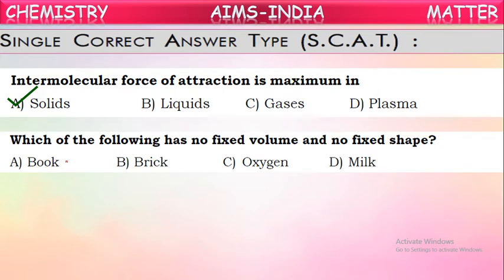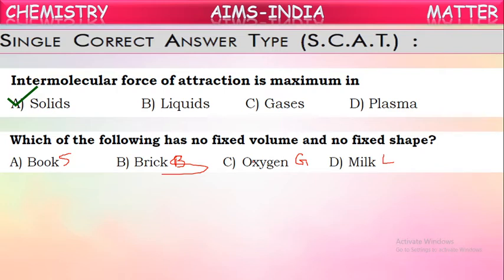Question 3: Identify the gaseous component among the four options. A book and a brick are solids. Oxygen is a gas. Milk is a liquid. Among these, oxygen is a gas — it does not have fixed volume or shape. So oxygen is the correct answer.